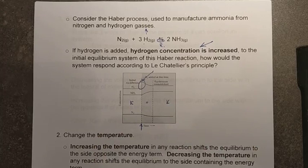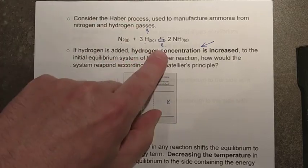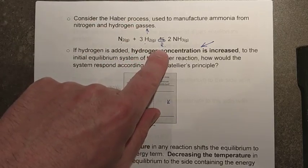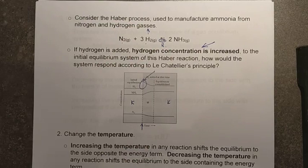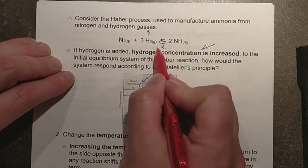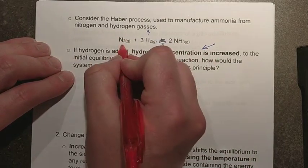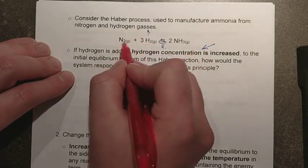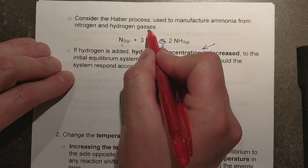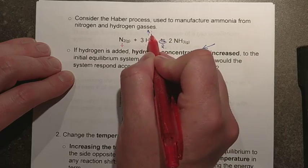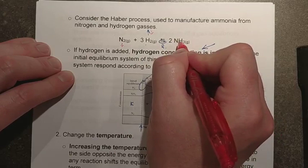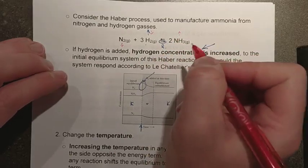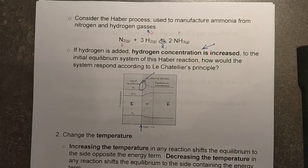Hopefully this makes sense. We're talking about an imposed stress — identify it, predict a shift right or left to oppose it, and then look at the consequences. The consequences here: if the forward reaction rate increases, I consume more nitrogen so it goes down. I had an artificially increased amount of hydrogen but then it decreases from there. And my ammonia, which was fixed before, increases in concentration as well.